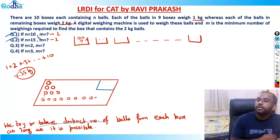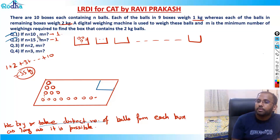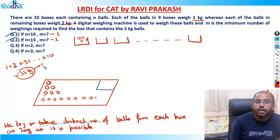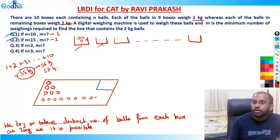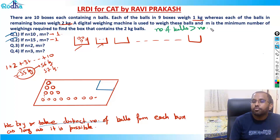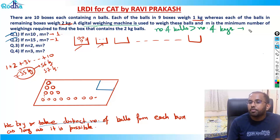As long as I can pick a distinct number of balls from each bag, it doesn't matter whether n equals 10, 15, or more. We can generalize: whenever the number of balls in each bag is greater than the number of bags and we have a digital weighing machine, the minimum number of weighings will always be one.